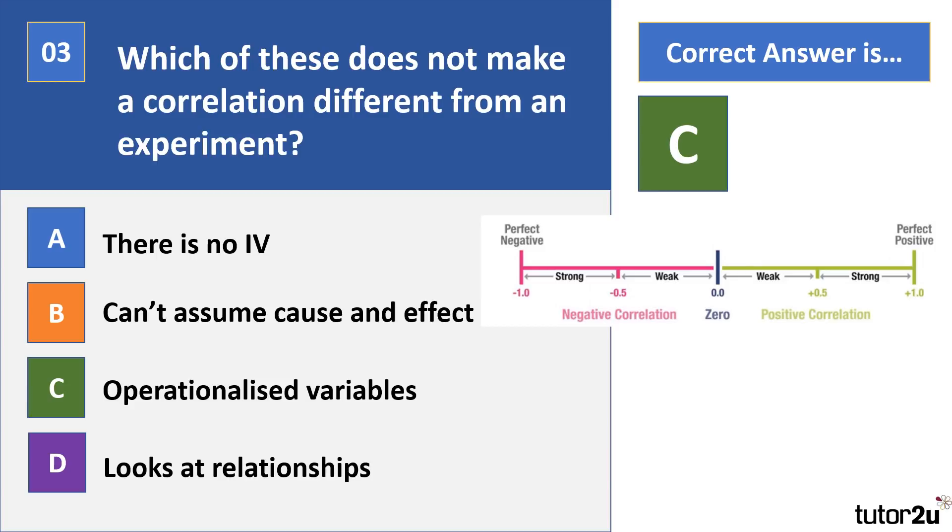For A, there is no IV in a correlation. We look at co-variables and not the IV and DV, so that's different. For B, can't assume cause and effect because there's no direct manipulation of the variables in a correlation. We can't say that X caused Y. D looks at relationships, and this is because they do look at relationships, whereas in experiments, as we've said, we can infer a bit more about cause and effect because we have that level of control.